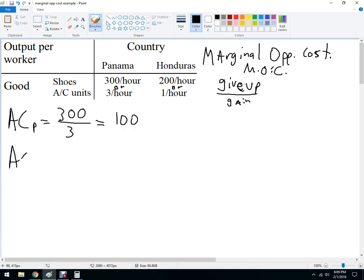Now the AC for Honduras is going to be 200. That's what they give up over one. So this would be 200.